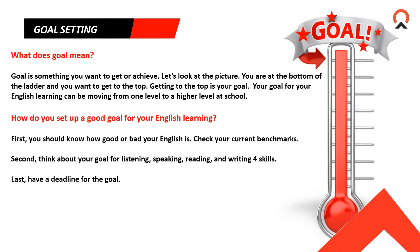Goal setting — what does goal mean? A goal is something you want to get or achieve. You are at the bottom and you want to get to the top, so getting to the top is your goal. Your goal for English learning can be moving from one level to a higher level at school. To set a good goal: first, you should know how good or bad your English is — check your current benchmarks. Second, think about your goal for listening, speaking, reading, and writing — the four skills. And last, have a deadline for the goal.